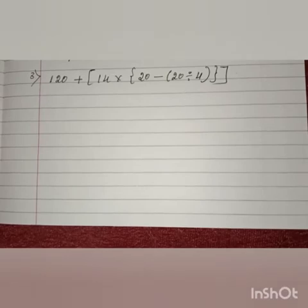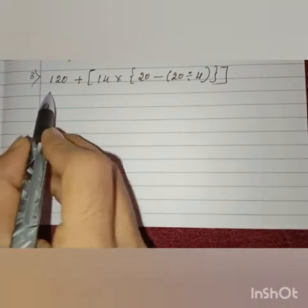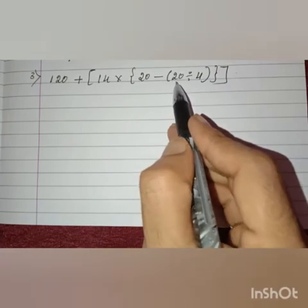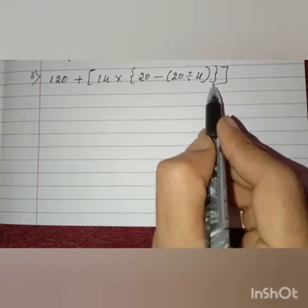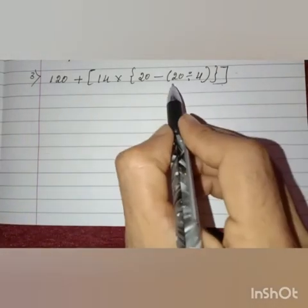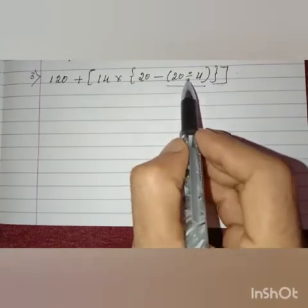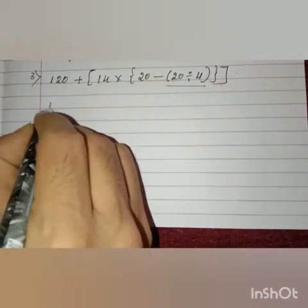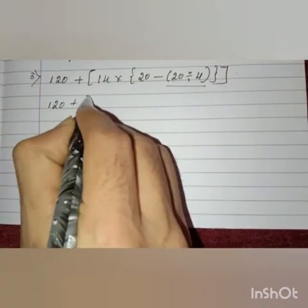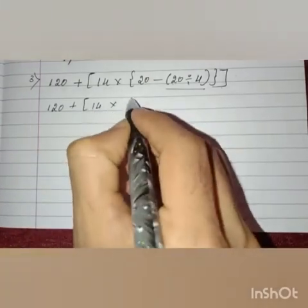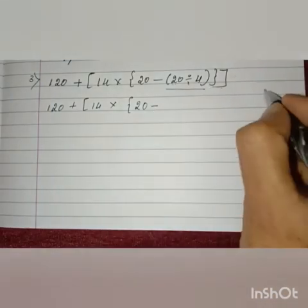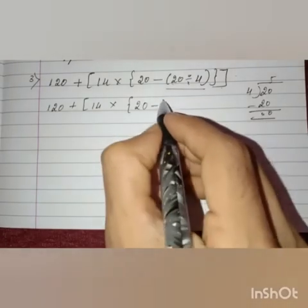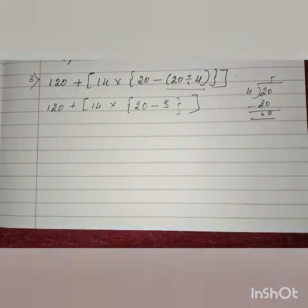The next question, number 3: 120 plus big bracket open 14 into curly bracket open 20 minus common bracket open 20 divided by 4 common bracket close curly bracket close big bracket close. First remove the common bracket — here they have given division. 20 divided by 4: 4 fives are 20, so we get 5. Curly bracket close, big bracket close.